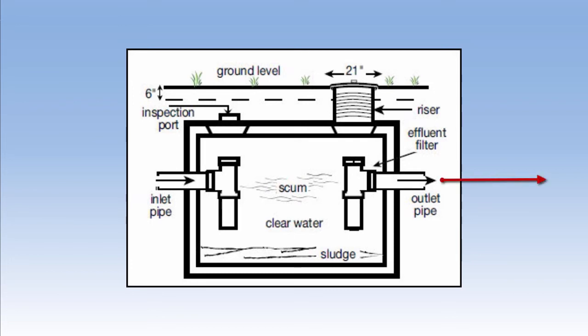On the right is the outlet pipe, which runs to the drain field. The outlet pipe usually has a filter to filter the scum.